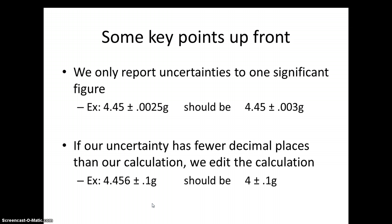There are a couple key items to keep in mind. First, we're only going to report uncertainties to one significant figure. If I'm reporting 4.45 plus or minus 0.0025 grams, I might as well round that to plus or minus 0.003 grams. Also, if I have a measurement accurate to the thousandth place but my uncertainty reflects plus or minus 0.1, the tenth place, I'm not going to need the hundredth and thousandth place in my final measurement.